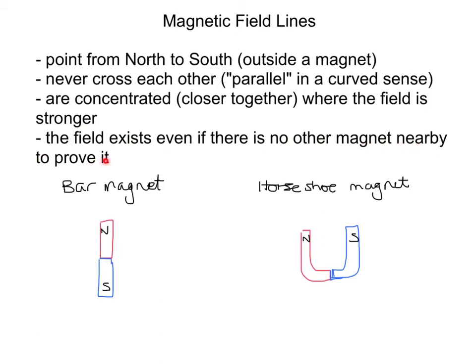And the field exists even if there is no other magnet nearby to prove it. So if I'm just holding a magnet, it doesn't seem like there's anything there, but we know that if we brought another magnet there, we'd get either a repel or an attract, depending on the poles of the magnet and the direction we're holding them.